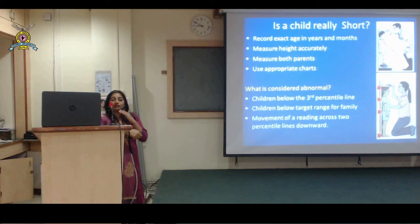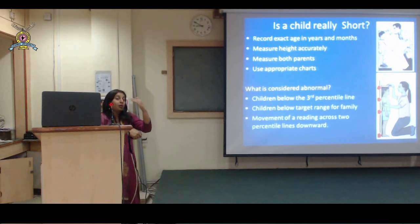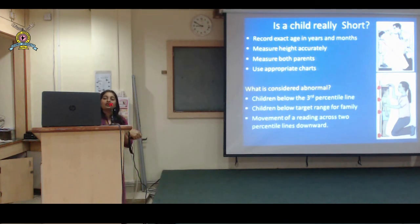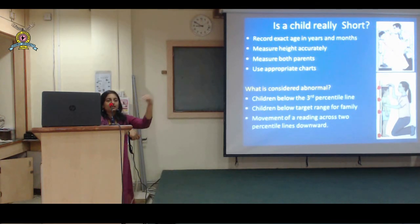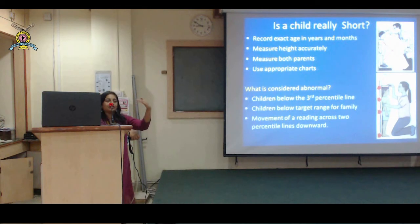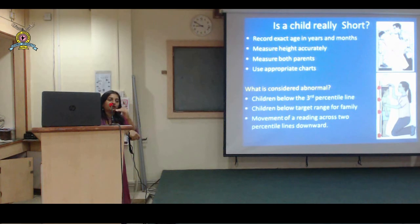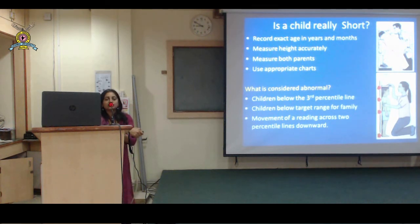Second indicator: children below the target range for family - if it is a tall family and the child is slightly below the family range, that may be abnormal. Third: movement of a reading across two centile lines downwards. If after a year the child has dropped from the 10th or 25th centile to the 3rd centile, height doesn't reduce but the rate of growth decreases, and that is also considered abnormal warranting investigation.